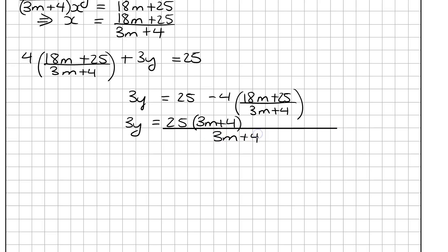So 3m plus 4 into 3m plus 4 is just 1, so I haven't changed it. And here, this is minus 4 times 18m plus 25, because this already has the 3m plus 4.